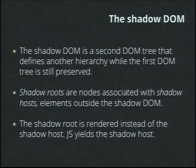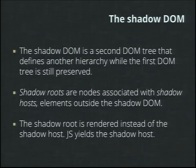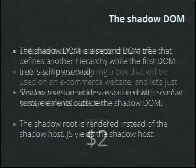The shadow DOM is a second DOM tree that defines another hierarchy while the first DOM tree is still preserved. We're talking about a duality between 'in the dark' and 'in the light.' In the dark is something in the shadow DOM; in the light is something exposed to the regular DOM, always present and always able to be interacted with. Shadow roots are nodes associated with shadow hosts — elements outside of the shadow DOM. The shadow root is rendered instead of the shadow host, and using JavaScript yields the shadow host.